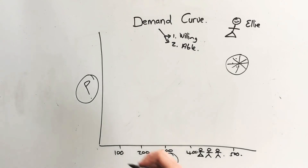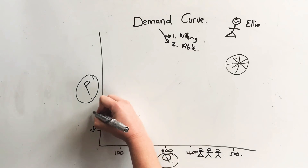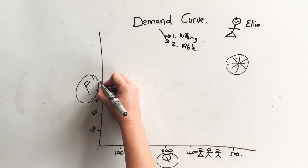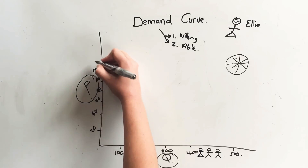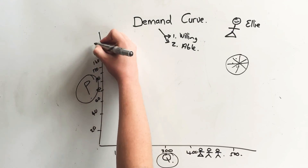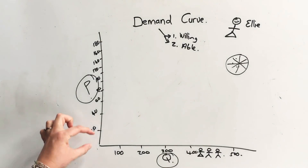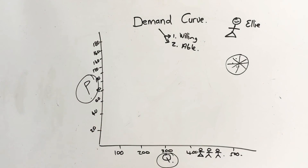Now let's add some numbers in. The pizza price can vary anywhere from 20 rand, 40, 60, 80, 100, 120, 140, 160, 180. The idea is that the intervals must be the same size.